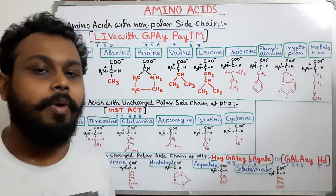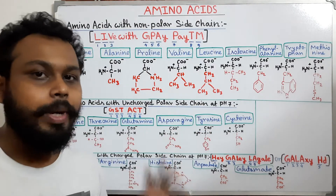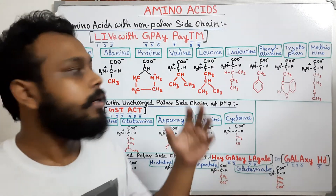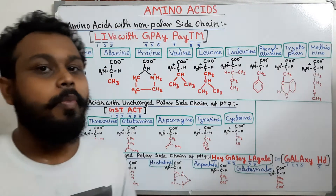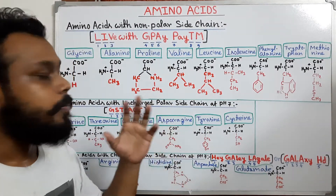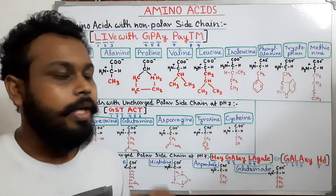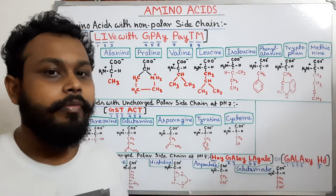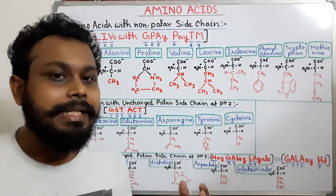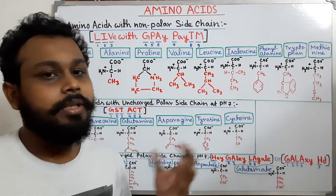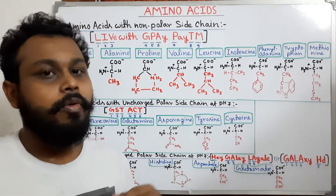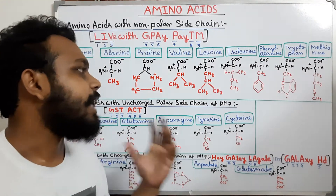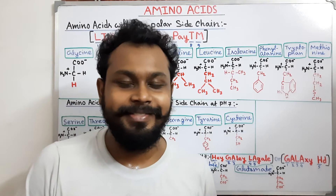In this way we can memorize all 20 standard amino acids present in our body. We can remember them even more prominently if we know their structure. In our next video, we will learn how to remember their structures more easily. Thank you for watching this video.